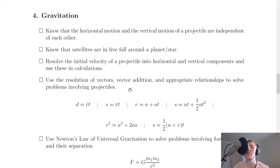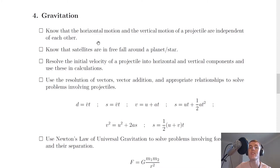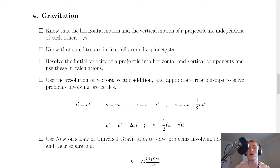It says here that you need to know that the horizontal motion and the vertical motion of a projectile are independent of each other. Remember we saw that at National 5 — whenever we're doing problems involving projectiles we need to treat the horizontal and vertical motion separately. Next it says to know that satellites are in free fall around a planet or star.